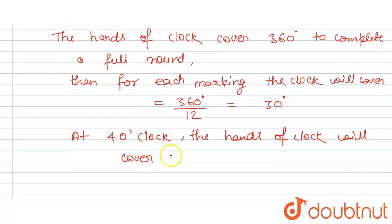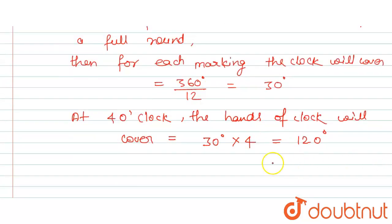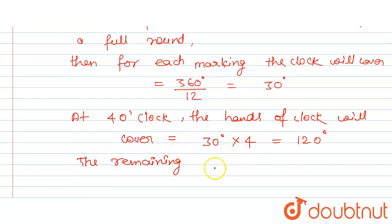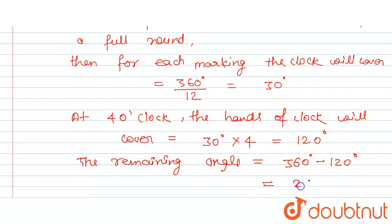At 4 o'clock, the hands of the clock will cover an angle of 30 degrees multiplied by 4, which equals 120 degrees. The remaining angle will be 360 degrees minus 120 degrees, which gives 240 degrees.